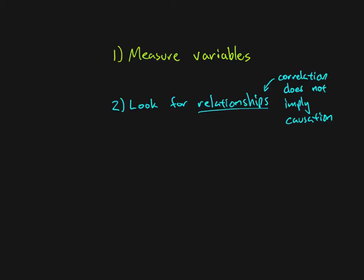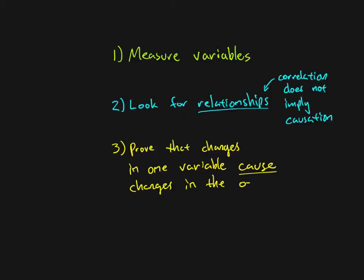So that's the third possibility is that we go beyond just looking for relationships, and we try to demonstrate causality. So we try to prove that changes in one variable cause changes in the other. And the key to doing that is that we have to be able to rule out all other reasonable explanations. And the typical way of doing that is by conducting an experiment.